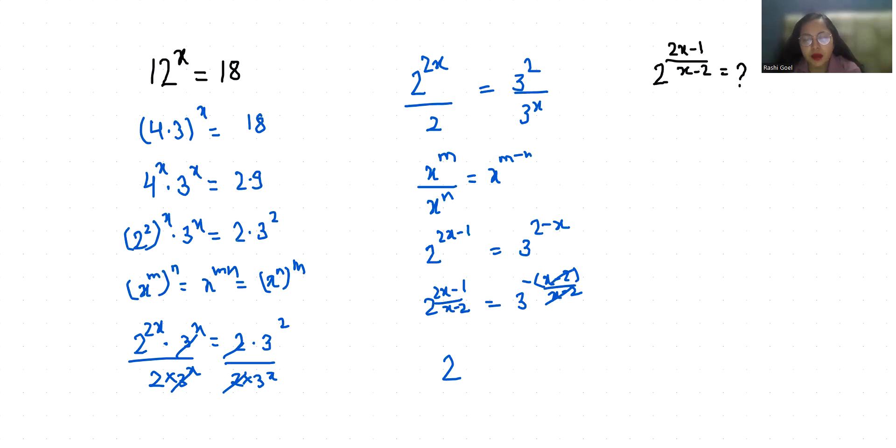Therefore, 2 power 2x minus 1 by x minus 2 equals 3 power minus 1, or we can say that 2 power 2x minus 1 by x minus 2 equals 1 by 3.